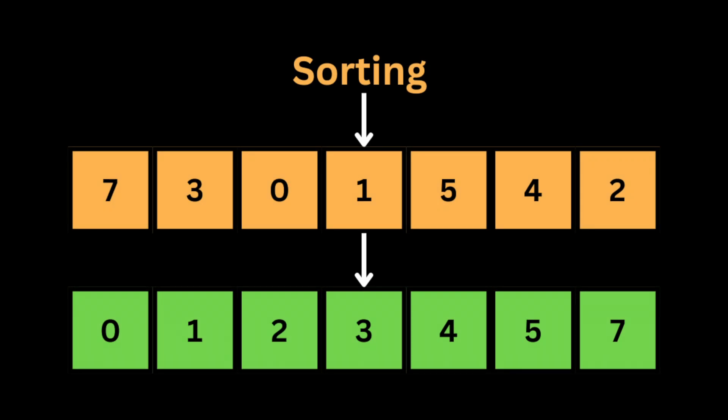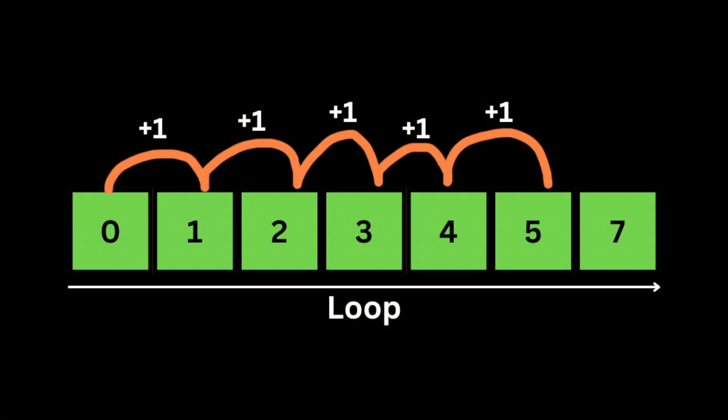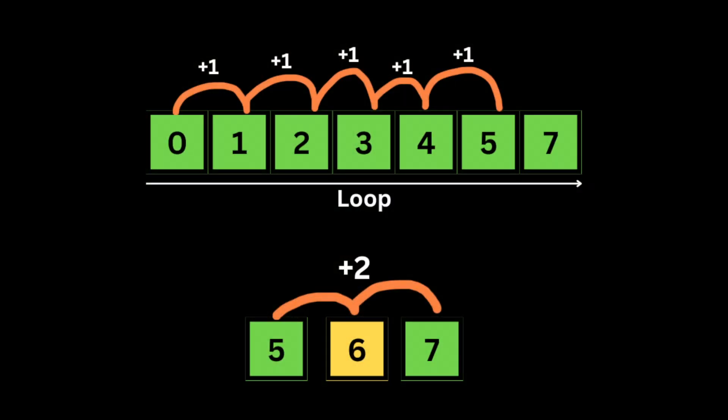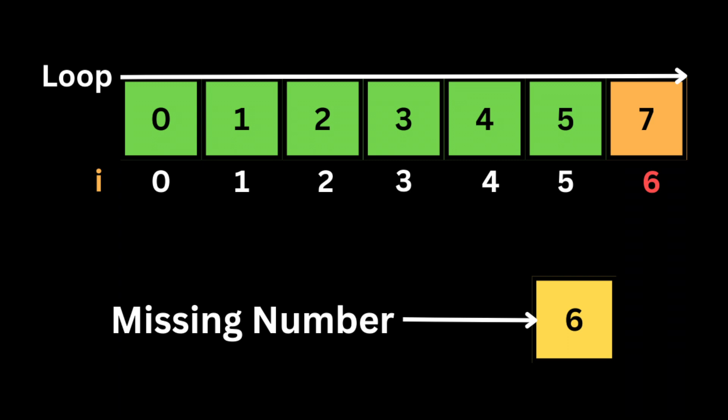The first way to solve this problem is by sorting the array, because if the array is sorted we can easily find the missing number. After sorting the input array, we'll have all the numbers in ascending order. We loop over the sorted array and each time check if the current number is bigger than the previous number by more than one. If true, the missing number is the current number minus one. For example, at number 7 we check if 7 is bigger than the previous number 5 by more than one — it is, so we return 7 minus 1, which gives us 6.